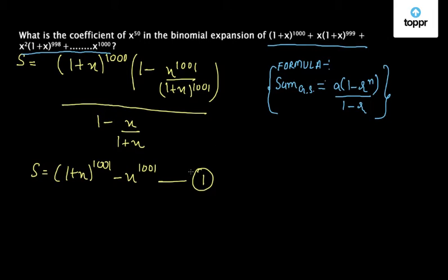Now since we already know that we need the coefficient of x to the power 50, and in equation 1 this particular portion is already raised to the power 1001, so we don't need this part to find a solution. Rather, we'll just take this part of the solution, that is (1 + x)^1001, and try to find out the coefficient of x^50 in it.